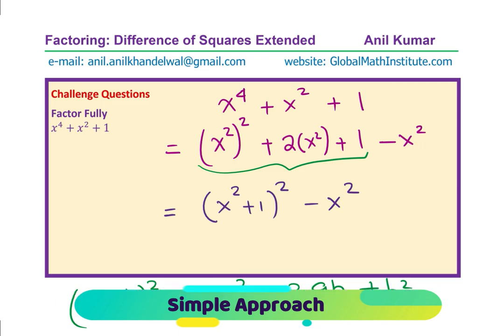Now, this is difference of squares, right? Square of x square plus 1 and x square. So we could write this as product of sum and difference, right? And this can be written as x square plus 1 plus x times x square plus 1 minus x. And now we have actually factored the given question.